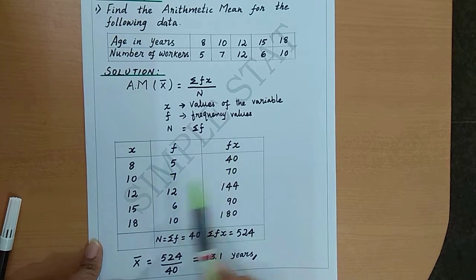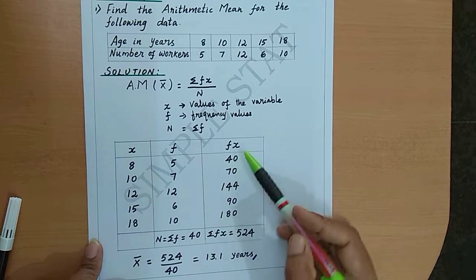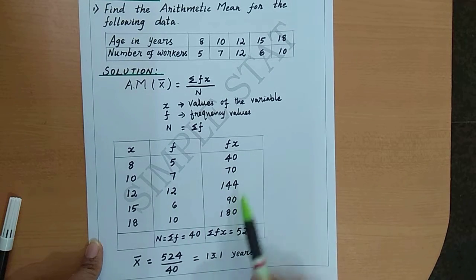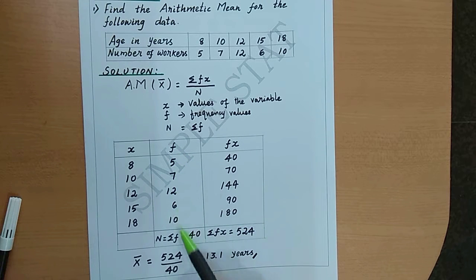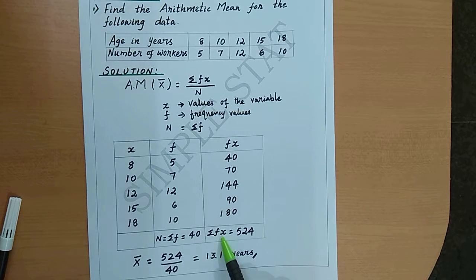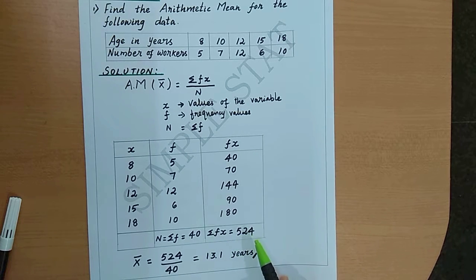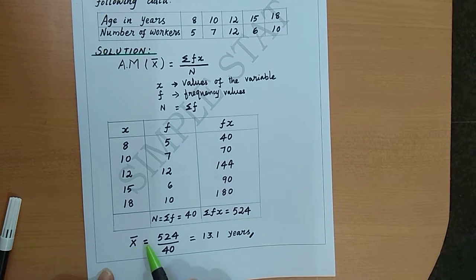Complete all the calculations and find the total. Similarly, find out total frequency values, which is denoted by capital n. So we have capital n equals summation f, which is 40, and summation fx is 524. Now x bar equals summation fx by n, which is 524 by 40, which will give you 13.1 years as the average.